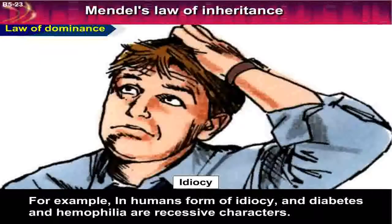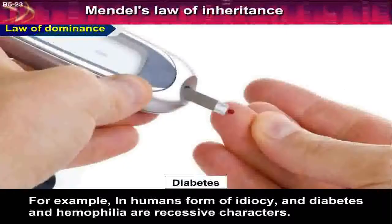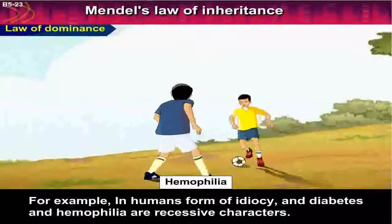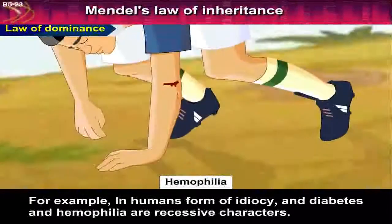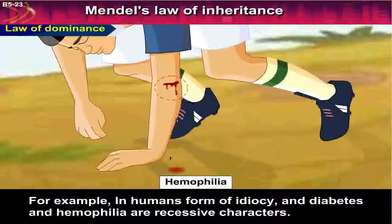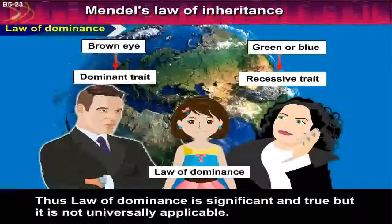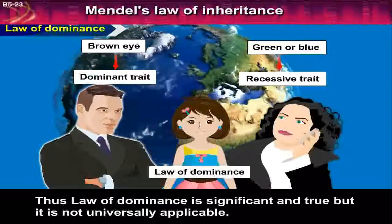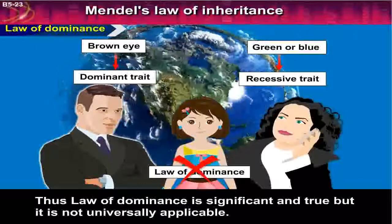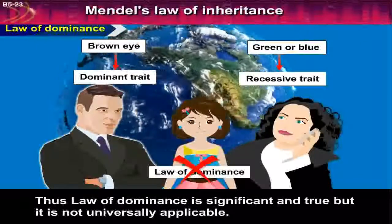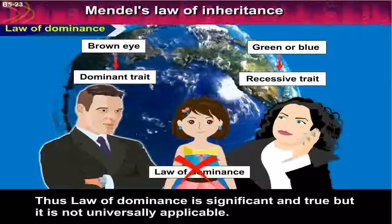For example, in humans, a form of idiocy, diabetes, and hemophilia are recessive characters. Thus, the Law of Dominance is significant and true, but it is not universally applicable.